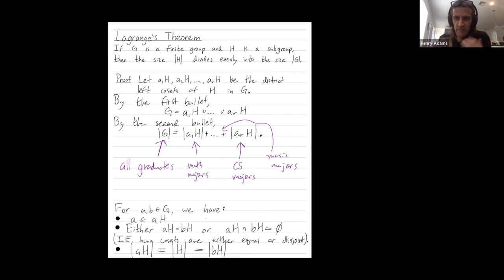Now, when you're talking about majors, there's plenty of double majors at Colorado State University, right? So for this particular example, the number of graduates would be smaller than the sum of the number of math majors plus the number of CS majors plus the number of music majors, et cetera, because you have some people who are both math majors and music majors.